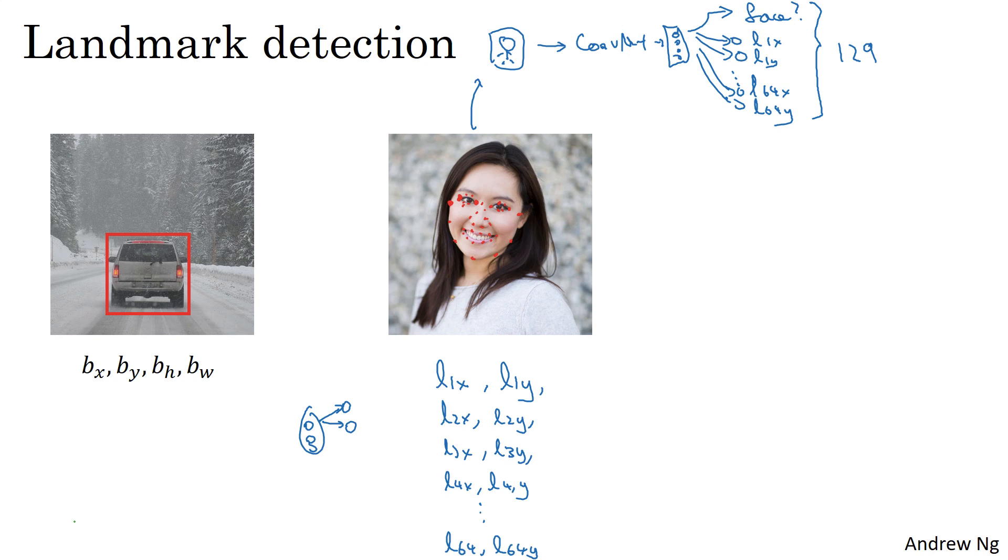This is a basic building block for recognizing emotions from faces. And if you played with the Snapchat and other entertainment AR augmented reality filters, like the Snapchat filters can draw a crown on the face and have other special effects. Being able to detect these landmarks on a face is also a key building block for the computer graphics effects that warp the face or draw on various special effects like put a crown or a hat on the person.